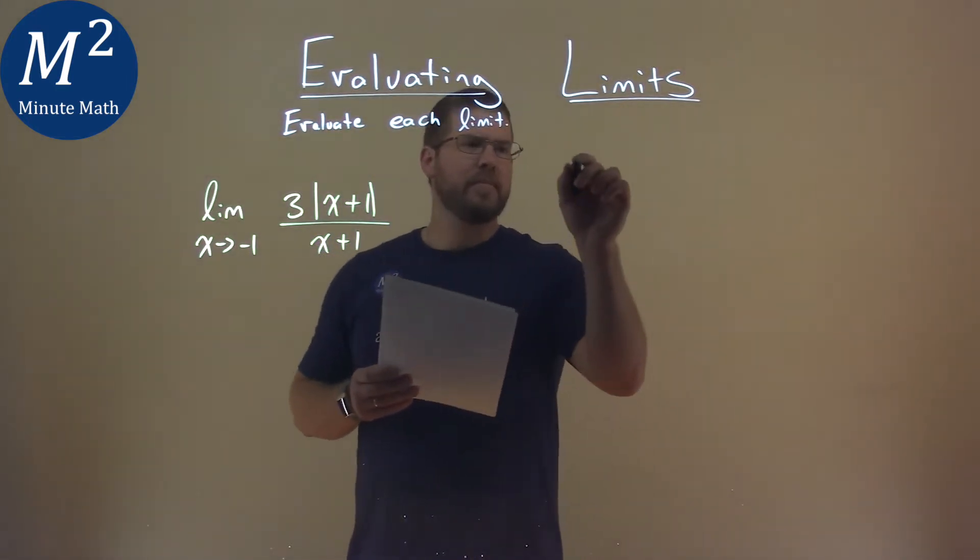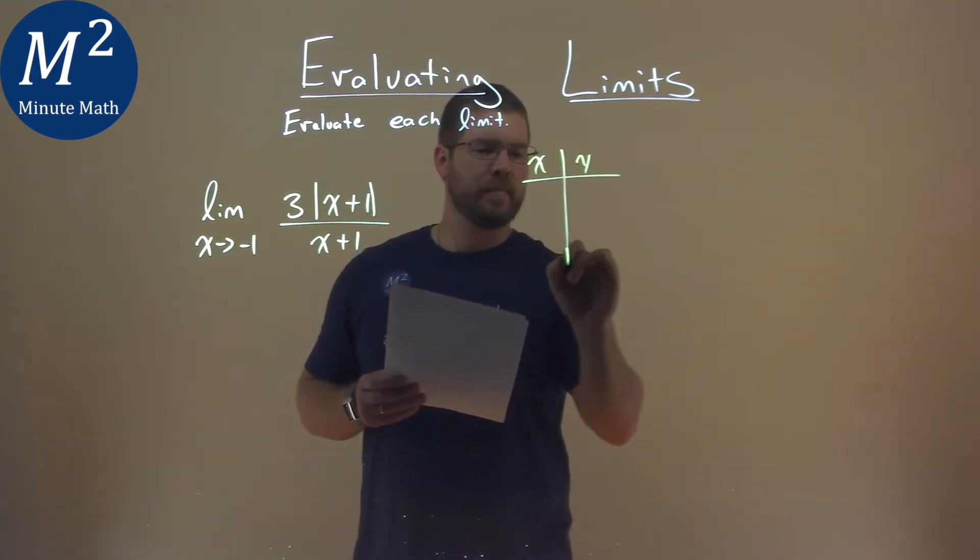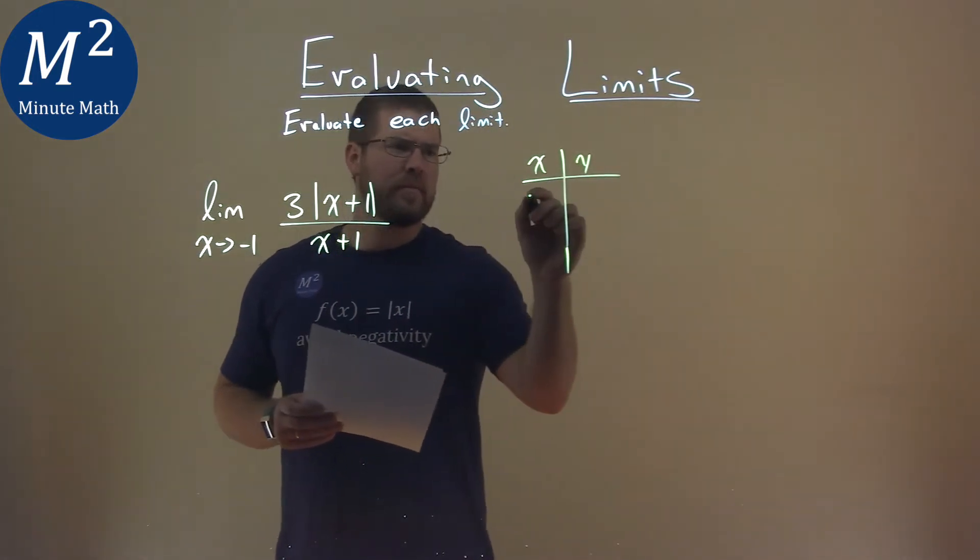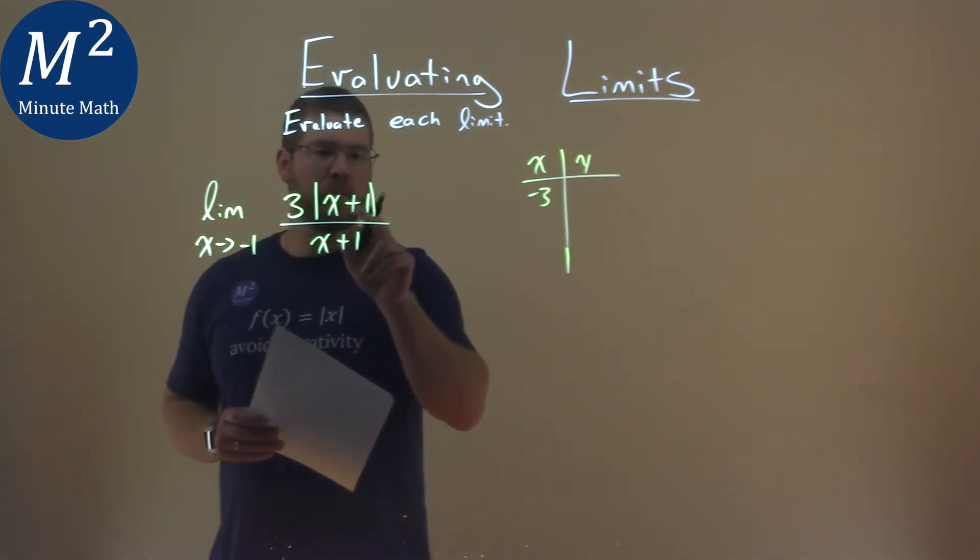So we do a table, and we have our x and our y here. If we put a negative 3 in for x, let's say, negative 3 here in the top part, we have negative 3 plus 1 is a negative 2. Absolute value of that makes it a positive 2, right?